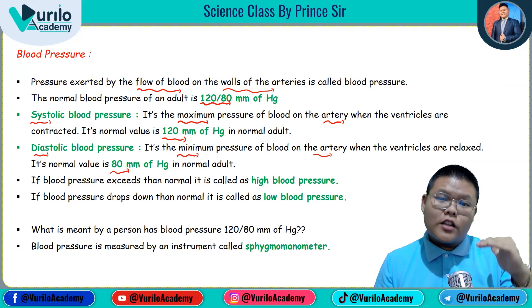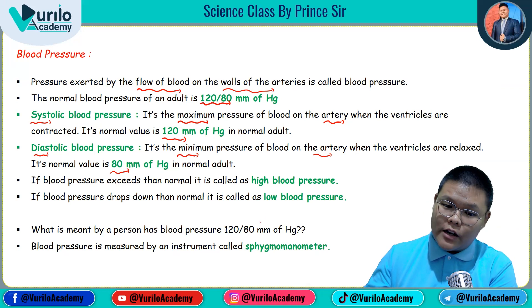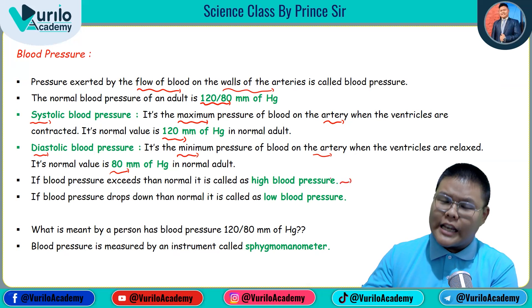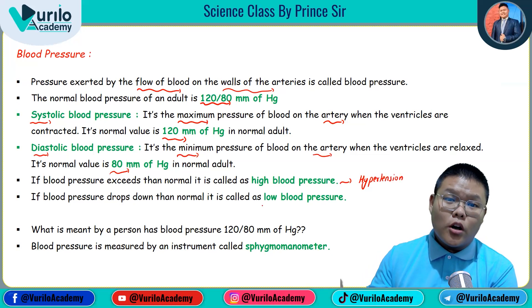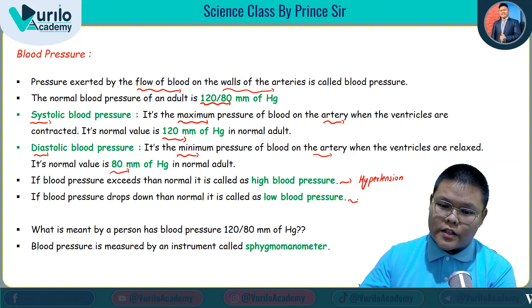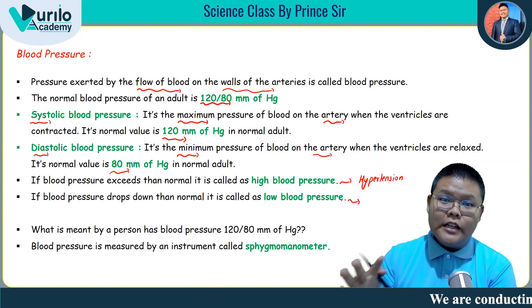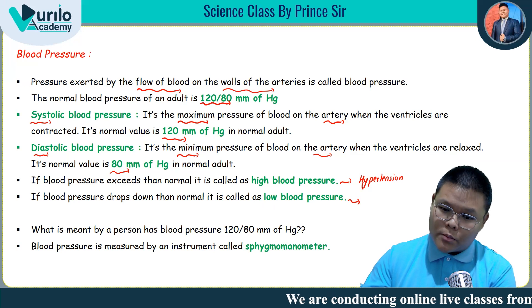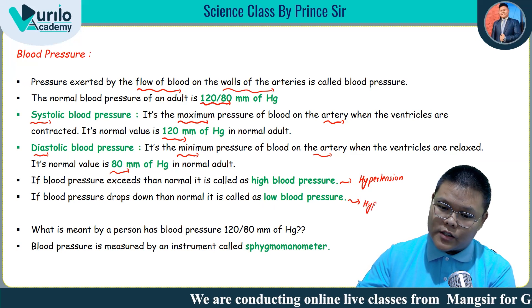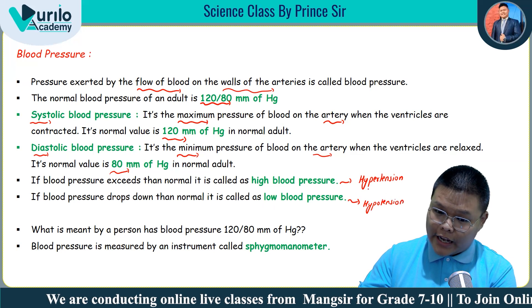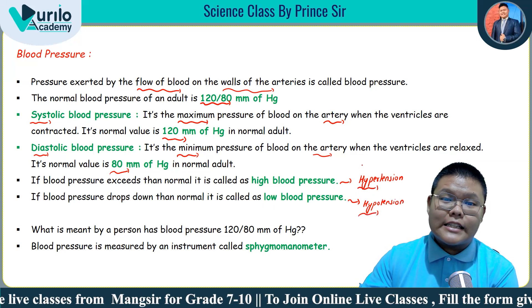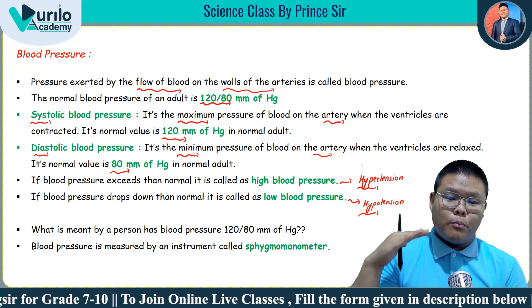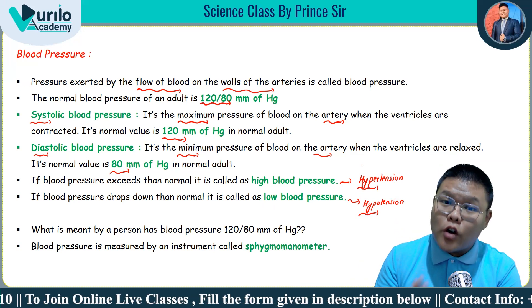If a person's blood pressure is higher than normal, that condition is called high blood pressure, also known as hypertension. If the blood pressure drops down below normal, that condition is called low blood pressure, also known as hypotension. In medical science, the prefix 'hyper' means above/high and 'hypo' means below/low.